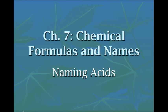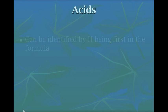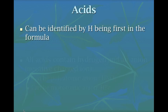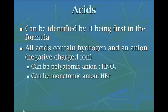We're going to start talking about naming acids. An acid can be identified by hydrogen being the very first element in the formula. All acids contain hydrogen and they contain an anion, or negatively charged ion.